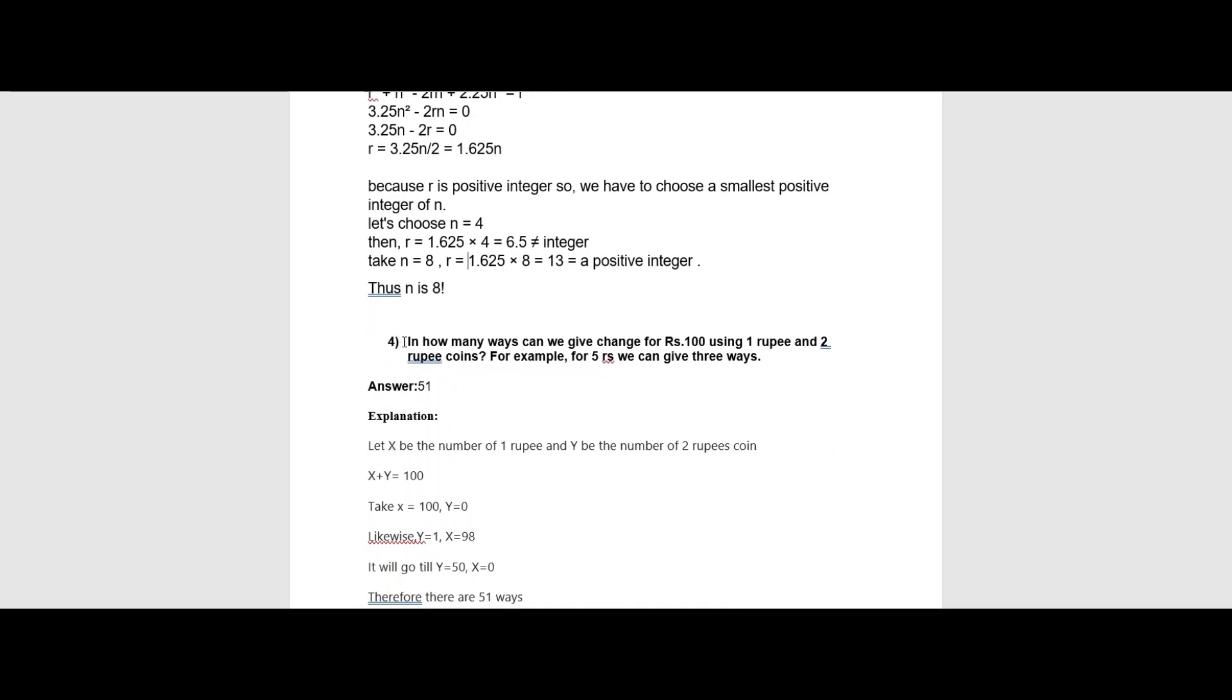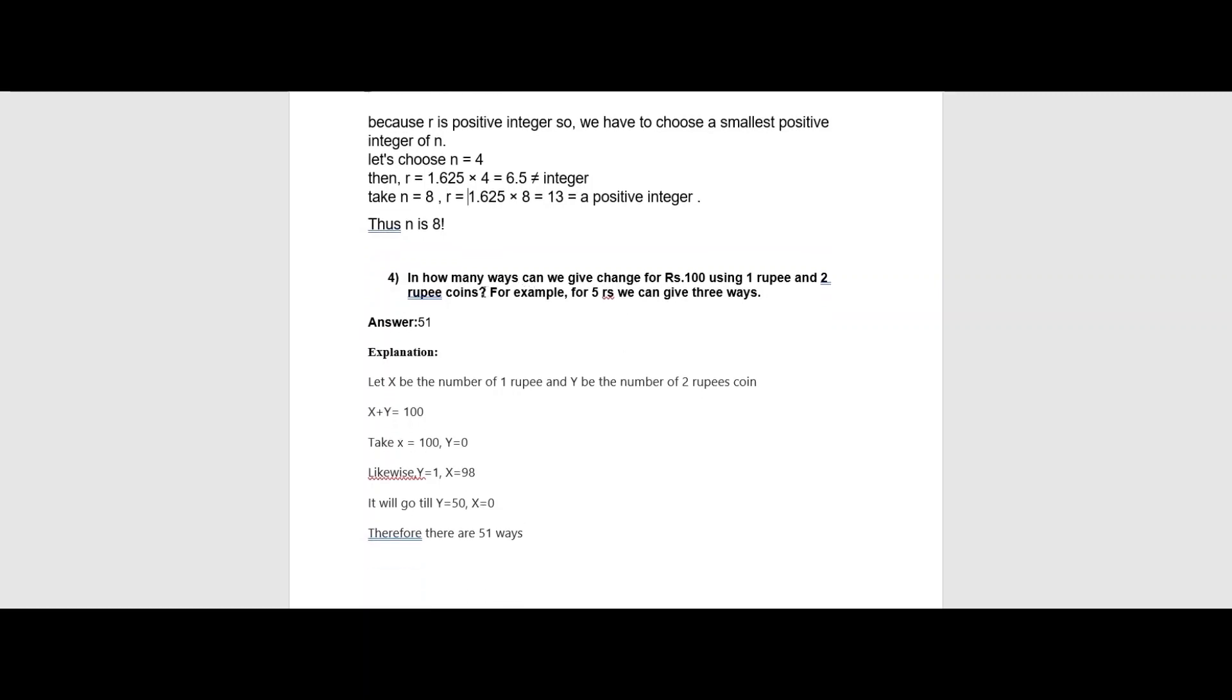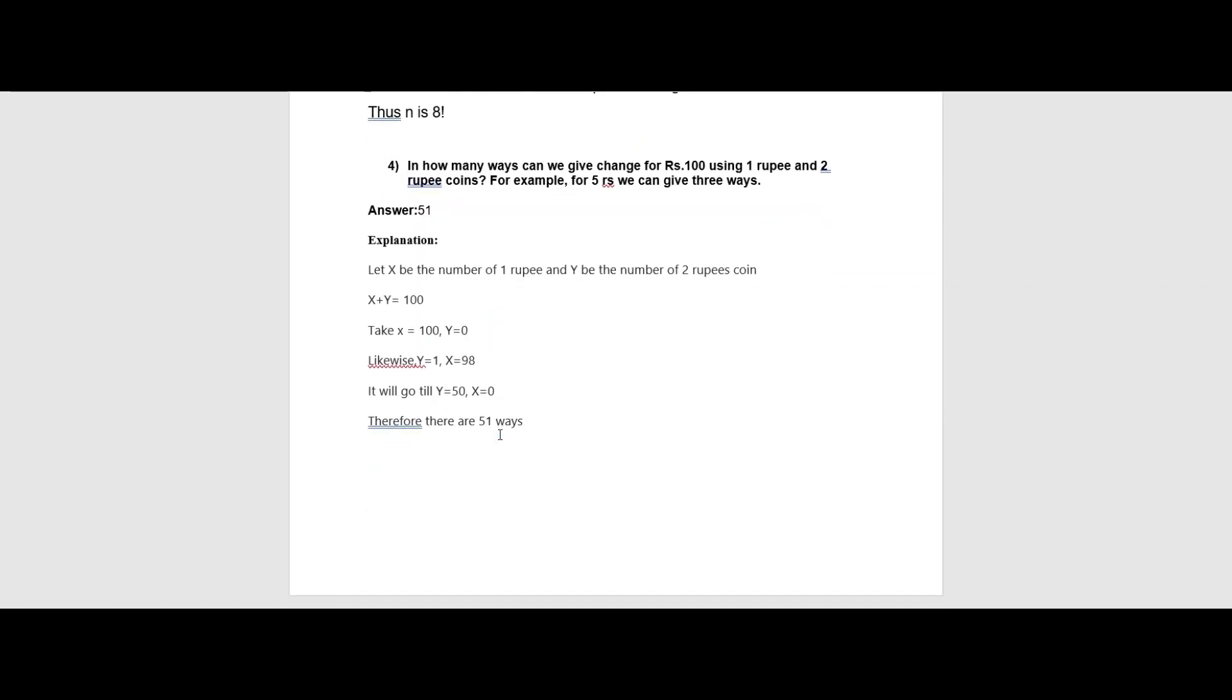Moving on to the next question. Number 4. How many ways can we give change for rupees 100 using 1 rupee and 2 rupee coins? For example, rupees 5 we can give 3 ways. This is an example that we need to account for. Now thinking about this question, solving the question that we have been given, they have said that the answer is 51. How are they getting 51? It's very simple.